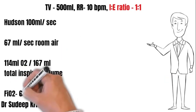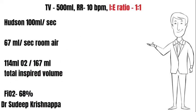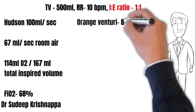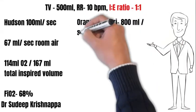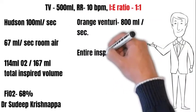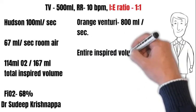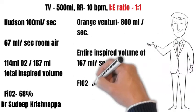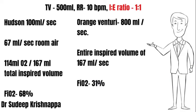In contrast, the orange Venturi generates 800 mL per second flow, so even in this scenario the entire 167 mL per second is met by the flow generated by the Venturi, with no need for further entrainment of room air. The FiO2 remains at 31%.